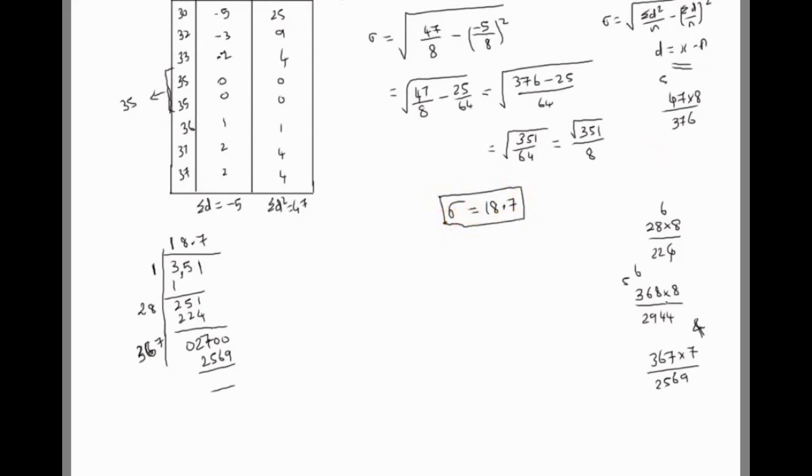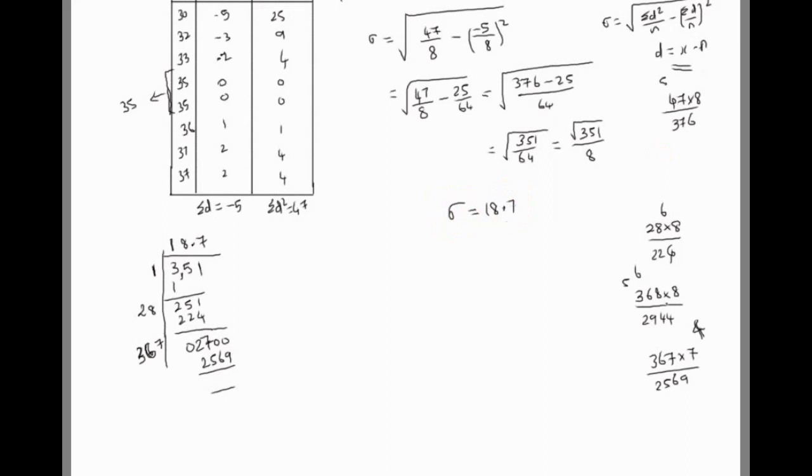Now divide 18.7 by 8. 8 goes into 18 two times, giving 16, with balance 2. Bring down the 7 to get 27. 8 goes into 27 three times, giving 24, with balance 3. So we get 2.3. Therefore, the standard deviation sigma equals 2.3. Thank you.